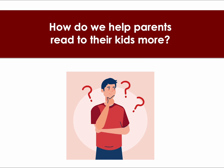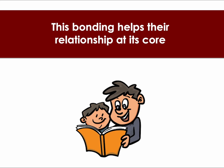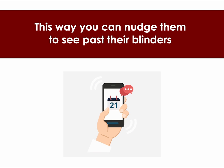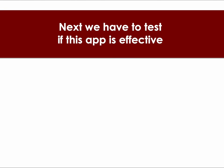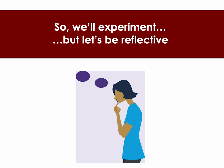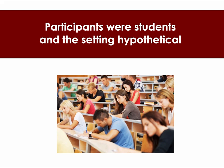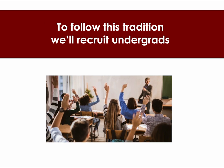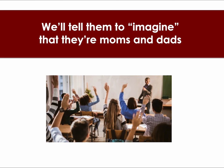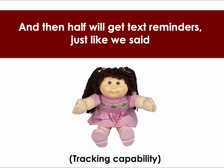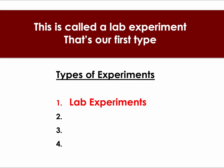How do we help parents read to their kids more? This bonding helps their relationship at its core. So you make an app that sends text reminders — this way you can nudge them to see past their blinders. Next we have to test if this app is effective, so we'll experiment, but let's be reflective. For years most experiments were very theoretical — participants were students and the setting hypothetical. To follow this tradition we'll recruit undergrads, tell them to imagine that they're moms and dads, give them a doll that can track how much is read, and half will get text reminders just like we said. This is called a lab experiment — that's our first type.